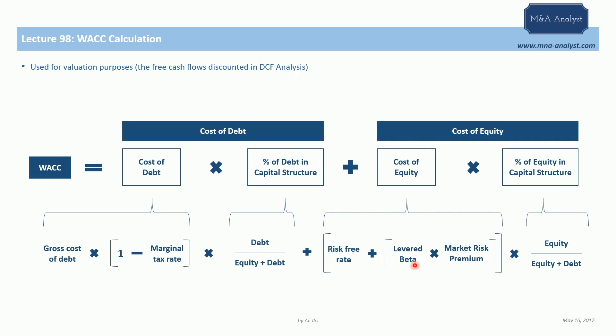Power generation, utilities, and financial services can be considered good examples of low-beta sectors. Companies in these sectors are not expected to be greatly affected by movements in the market in general, as they provide necessary goods and services. A beta greater than one, on the other hand, means the company has higher systematic risk than the market. Construction, supplies, and entertainment industries are good examples of high-beta sectors, indicating greater risk than the market overall.